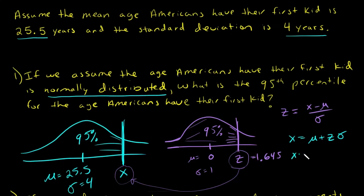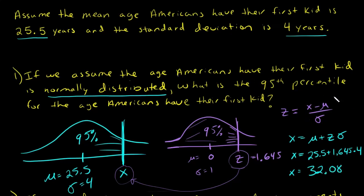Now I can plug in everything I know: mu is 25.5, z is 1.645, and sigma is 4. Going to the calculator, I get 32.08. So the 95th percentile for the age that Americans have their first kid is 32.08 — or in other words, 95% of Americans having their first kid are younger than 32.08 years old.